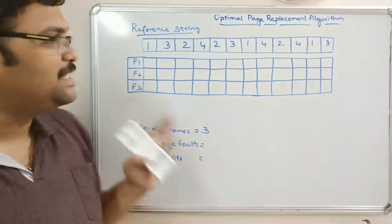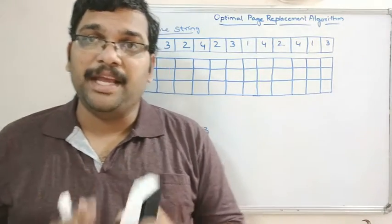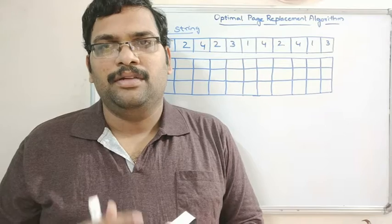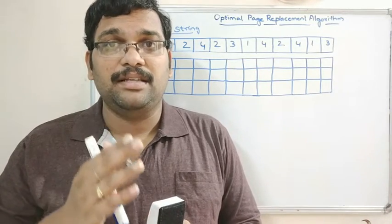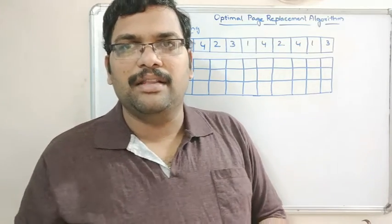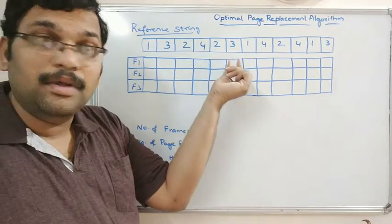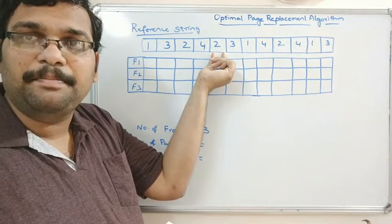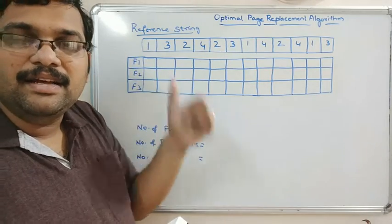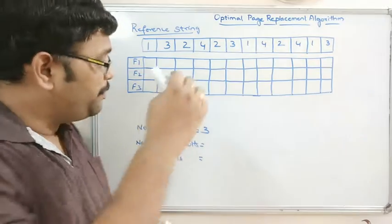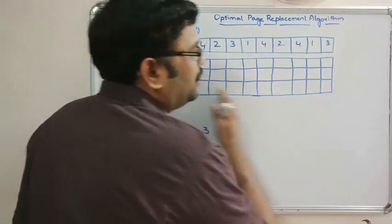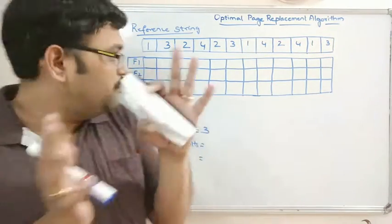In the optimal page replacement algorithm, we replace the page which is not going to be used for a long duration in the future. So we replace a page such that it should not be used for a long time ahead. Recall that in LRU we traveled from the required page towards the left side; here we have to replace the page not used long in the future, so we travel in the right direction.